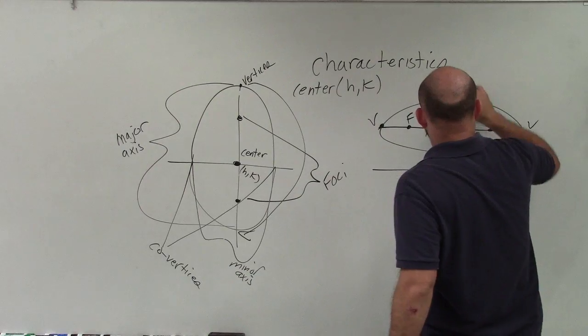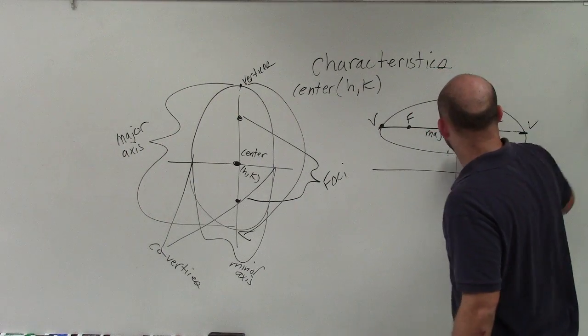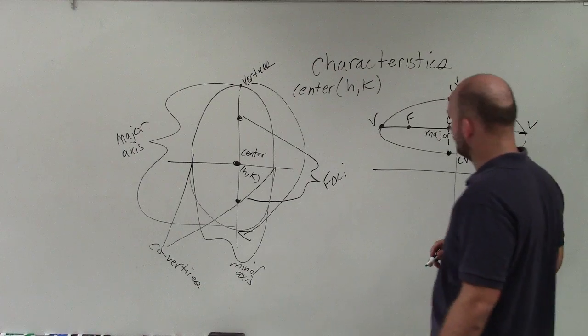And let's just pretend here, here's my minor axis. So I'll say, all right, here's a co-vertice, and here is a co-vertice.